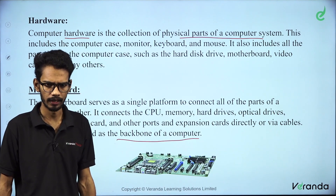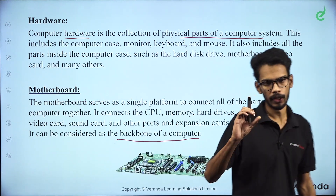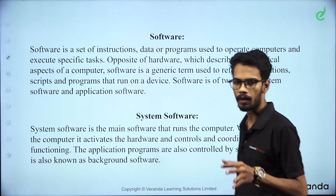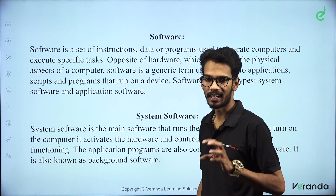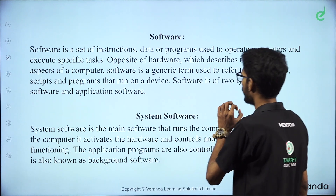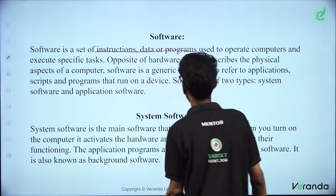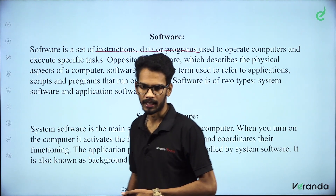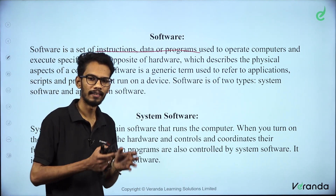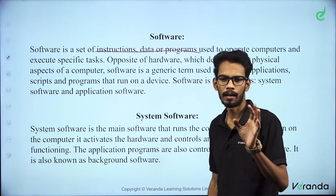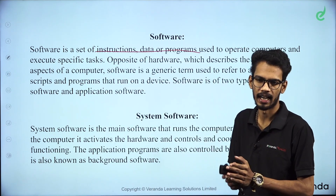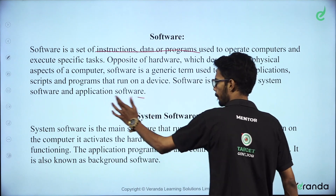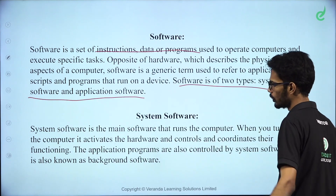The brain of a computer is the main question. What are the types of software? We have two types of software: one is system software and the other is application software. Software is a set of programs and data instructions designed for a specific task. Hardware is something we can get physically — we can touch it. But software we cannot touch.